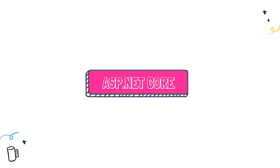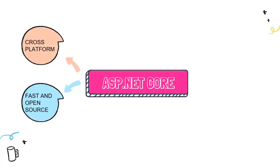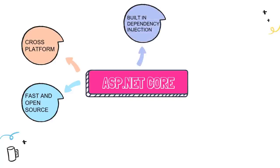Why should one use .NET Core compared to classic .NET? .NET Core comes with many advantages. First, ASP.NET Core is fast and open source — benchmarks show it is very fast compared to Web Forms or even .NET MVC. .NET Core is also cross-platform; the classic .NET was tied to IIS and Windows, but since .NET Core is rewritten, that dependency is removed. We also have built-in support for dependency injection, which saves a lot of time and is extremely helpful.